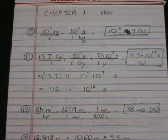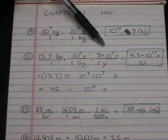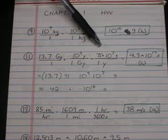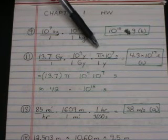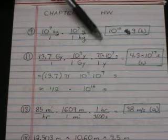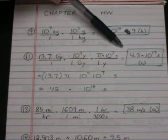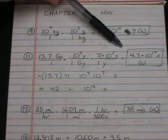Then I've used an approximation right here that one year is pi times 10 to the 7th seconds. If you want to be more accurate, you could calculate how many seconds are in a year, but this is a pretty good approximation. And in the end we get answer C, 4.3 times 10 to the 17th seconds.